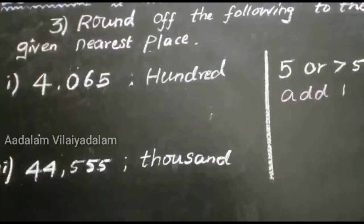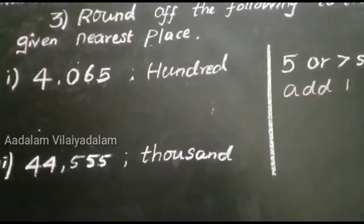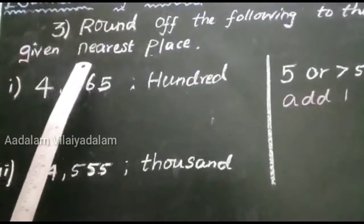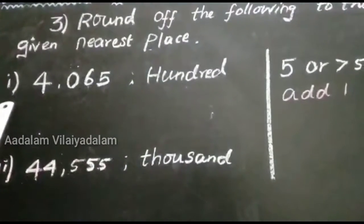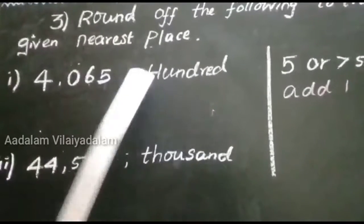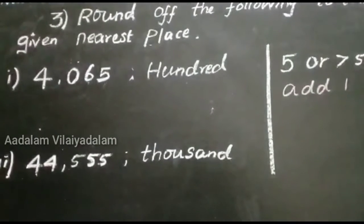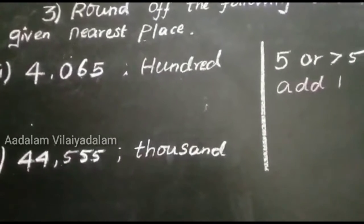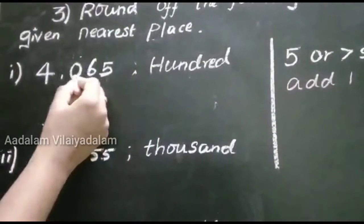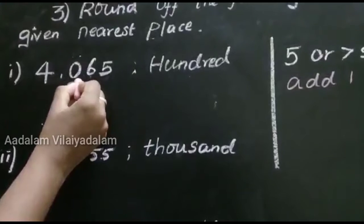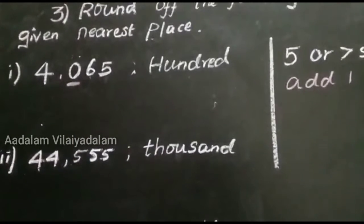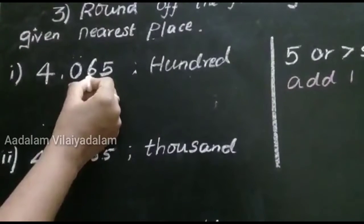Let us move on to the exercise 1.4, third question: round off the following to the given nearest place value. The first one is 4065, nearest to the 100 place. First, you identify the 100 place: 1, 10, 100. So this is the 100 place. Next, look at the digit to the right side.